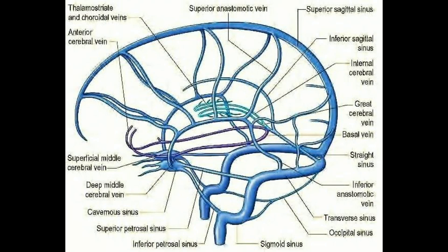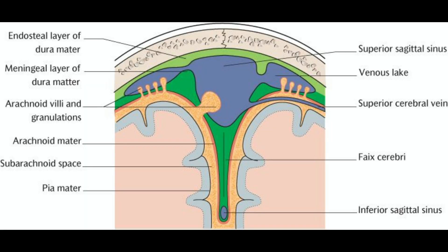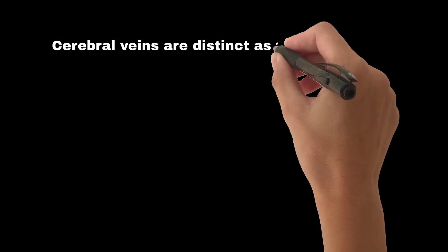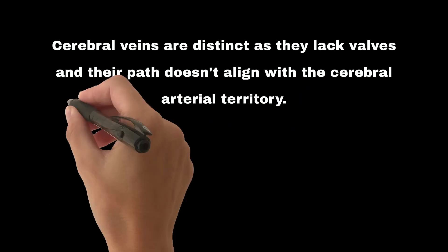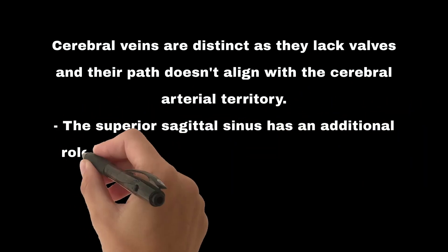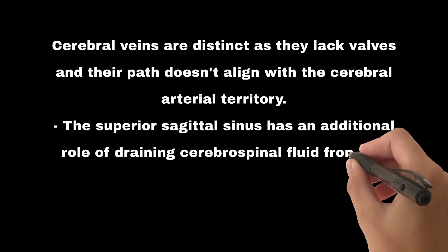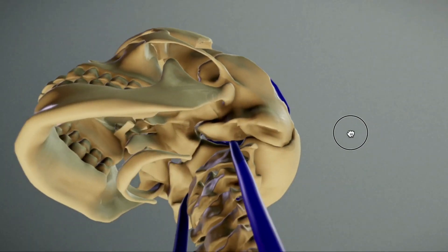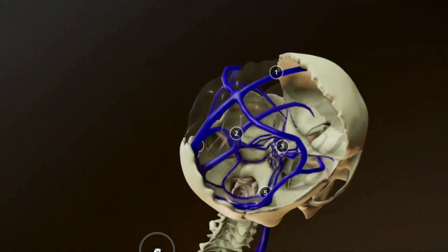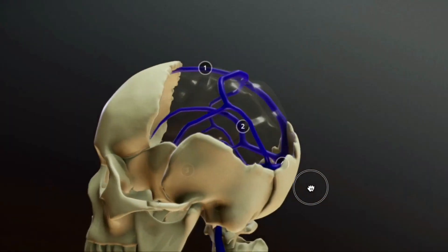The cerebral venous system is categorized into superficial and deep venous systems. These venous channels are situated intracranially between the endosteal and meningeal layers of the dura mater. Cerebral veins are distinct as they lack valves and their path doesn't align with the cerebral arterial territory. The superior sagittal sinus also drains cerebrospinal fluid from the subarachnoid space. The superficial system comprises the dural sinuses and cortical veins, responsible for draining the cerebral cortex and superficial white matter.